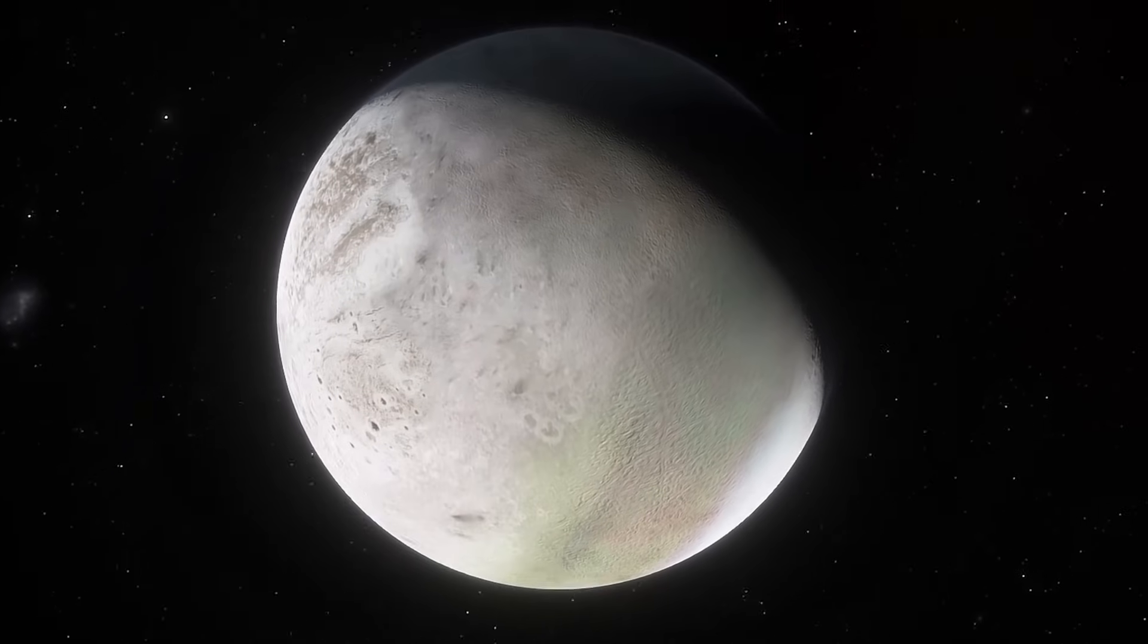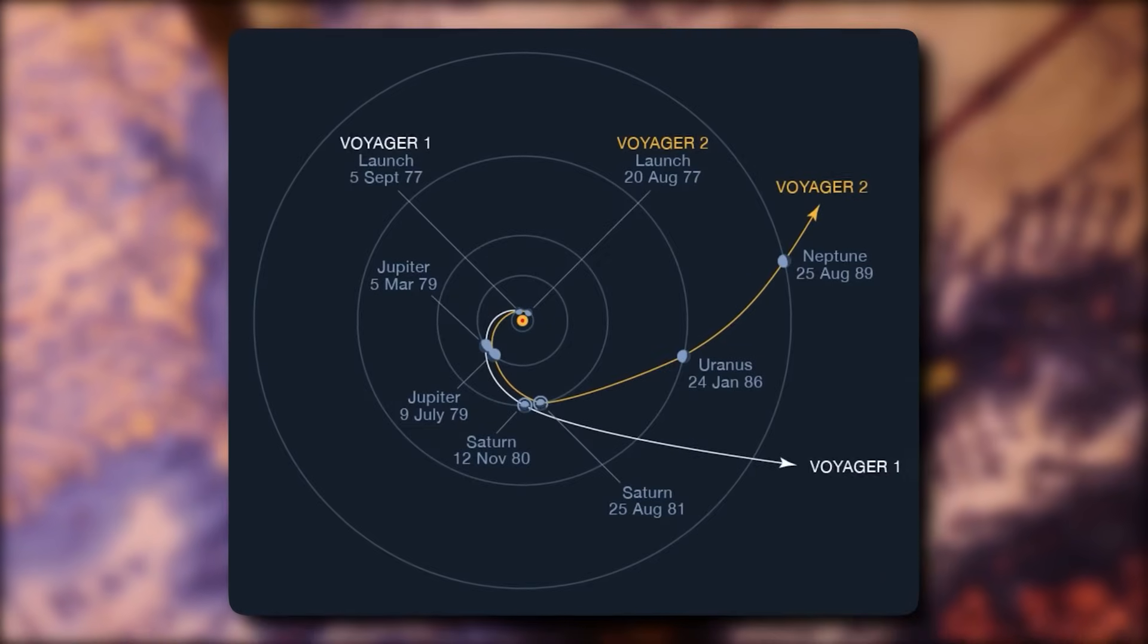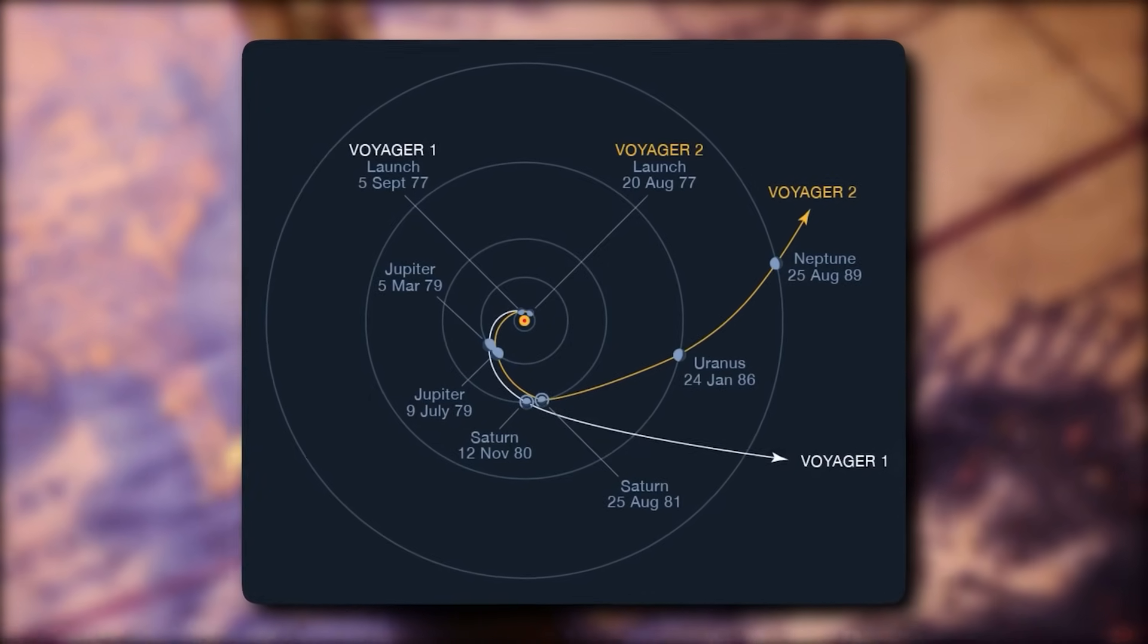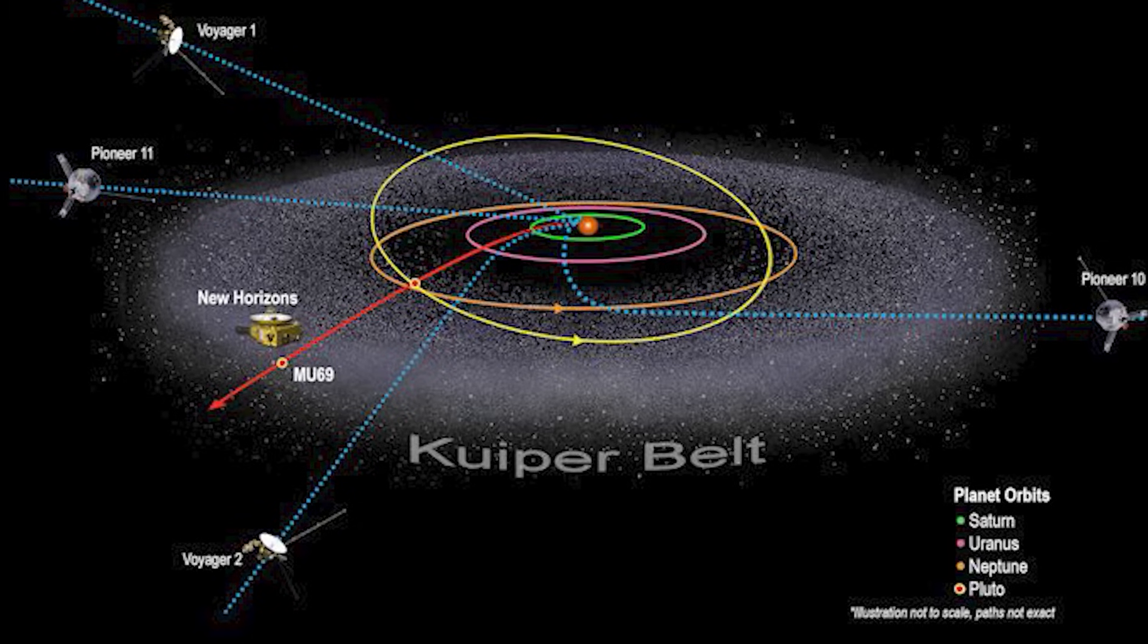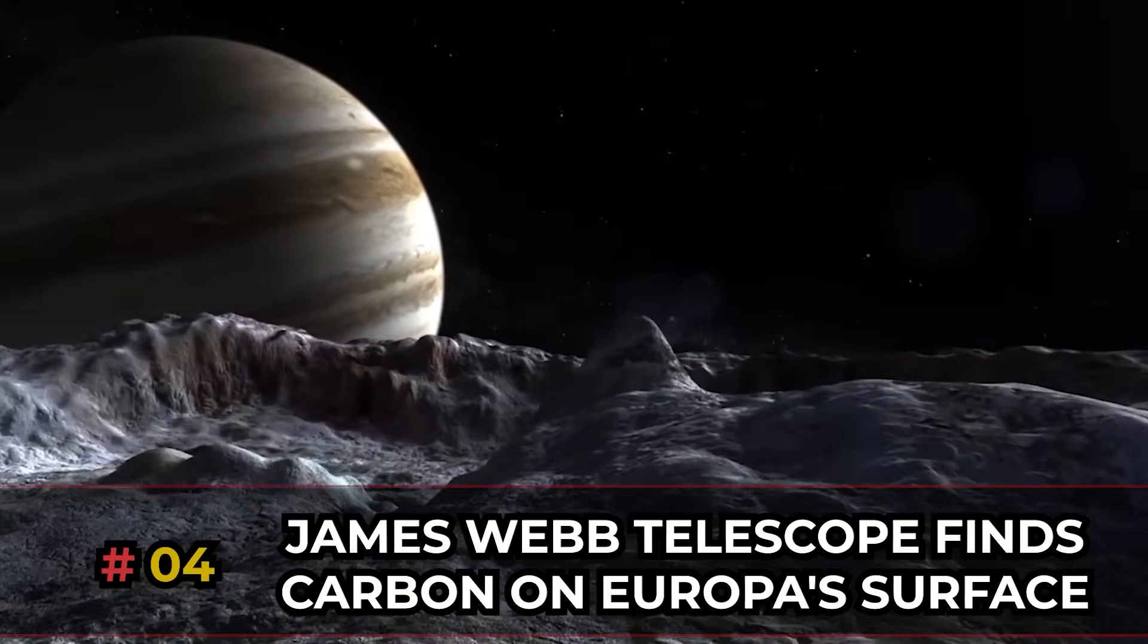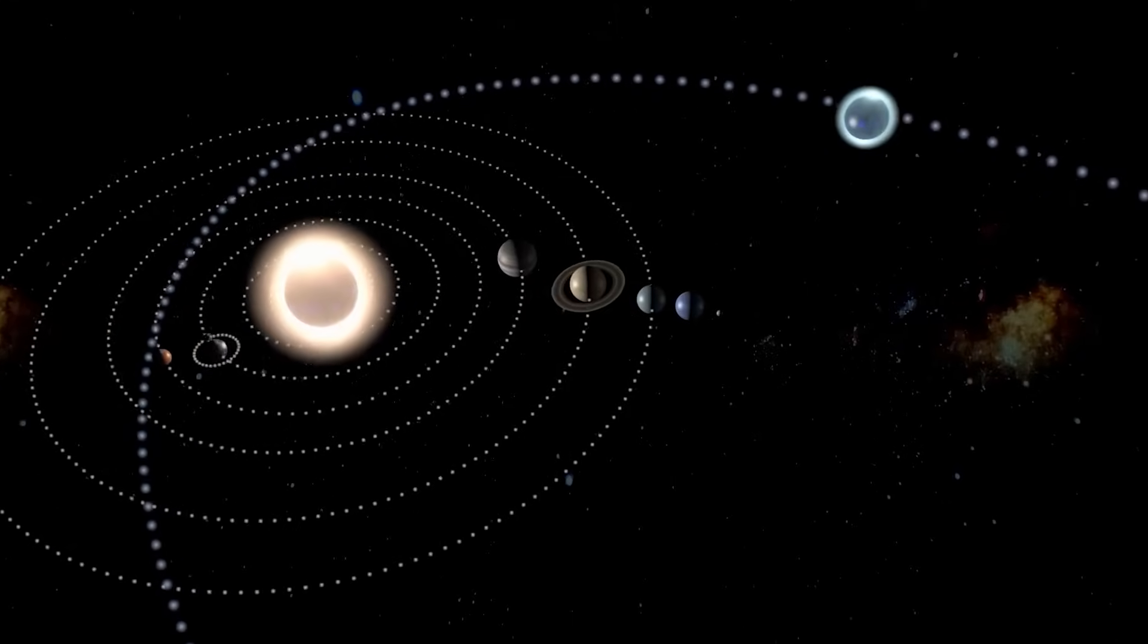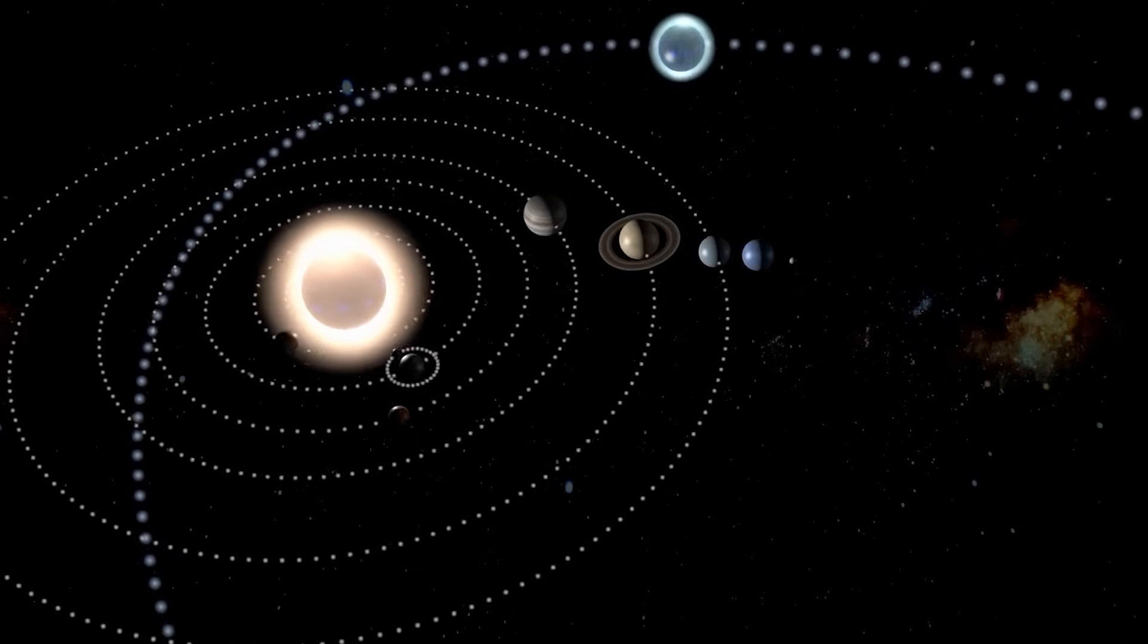There is a possibility that Triton originally formed as a small binary system, and a close encounter with Neptune sent Triton's twin flying away and left Triton itself trapped. Triton remains warm because like other Kuiper Belt objects, James Webb Telescope finds carbon on Europa's surface. Jupiter's moon, Europa, has always fascinated scientists. It's one of the few places in our solar system that could support life as we know it.